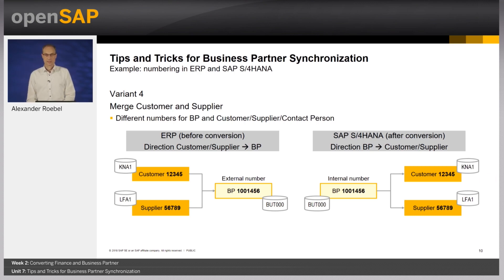These four slides showed the common options for numbering — this has to be discussed on a project basis. The first step is to document all used number ranges. You should check the current intervals as well as historic data, as it might be that the number range set up in the respective system has been changed. Accordingly, an analysis of the existing data is necessary. In the CVI cookbook mentioned in my previous unit, you will find an Excel spreadsheet to simplify and accelerate this exercise.